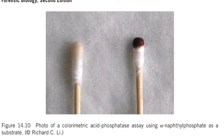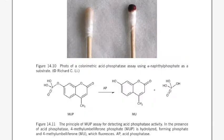Another approach is to take a sample and add alpha-naphthyl phosphate and Fast Blue BB to it. If it gives a purple color within 30 seconds, it is a clear indication that it is a semen stain. In this technique, alpha-naphthyl phosphate acts as a substrate and breaks down the phosphate.